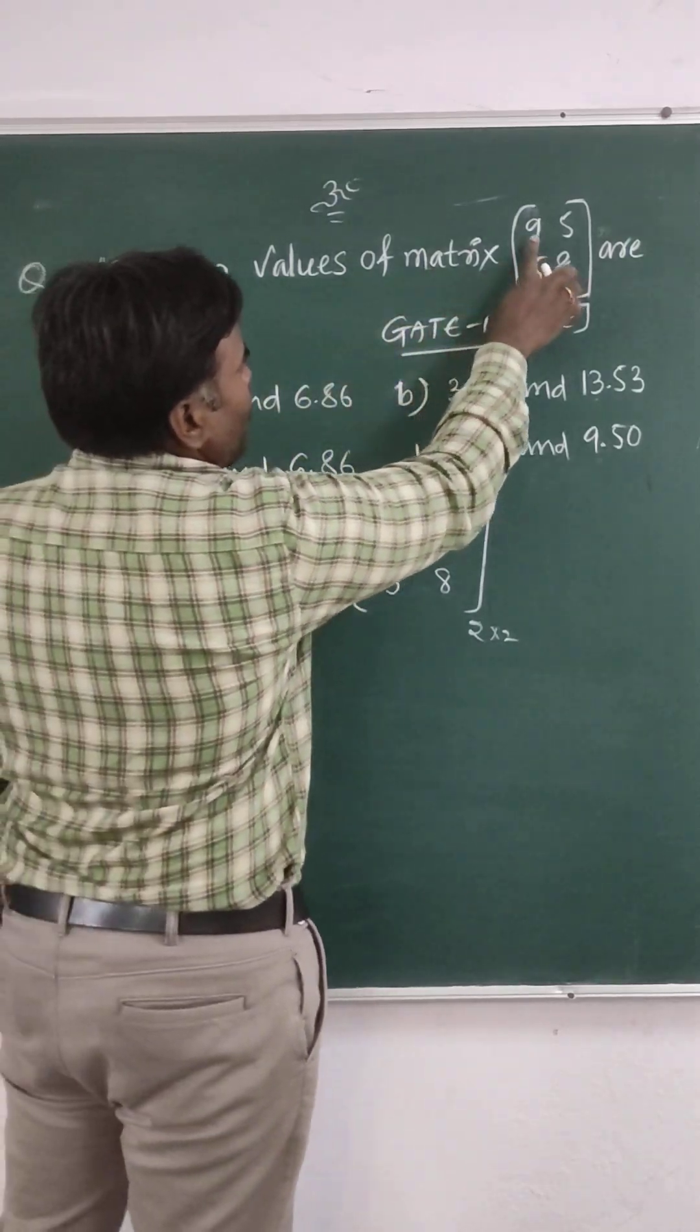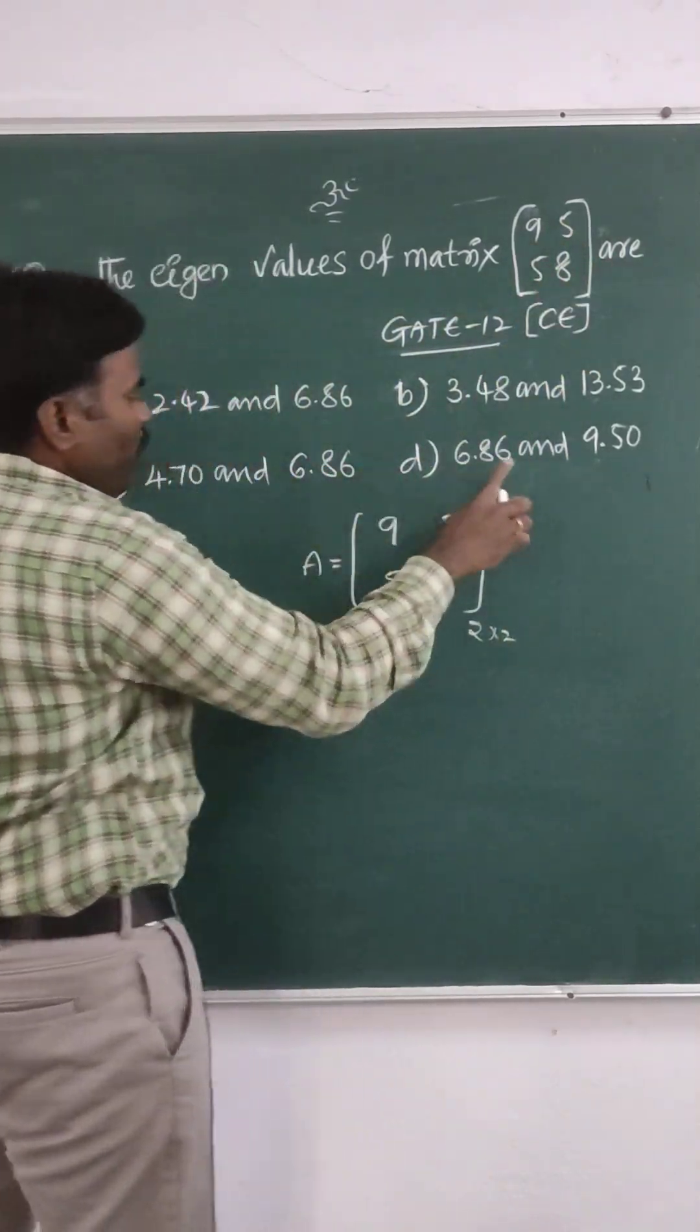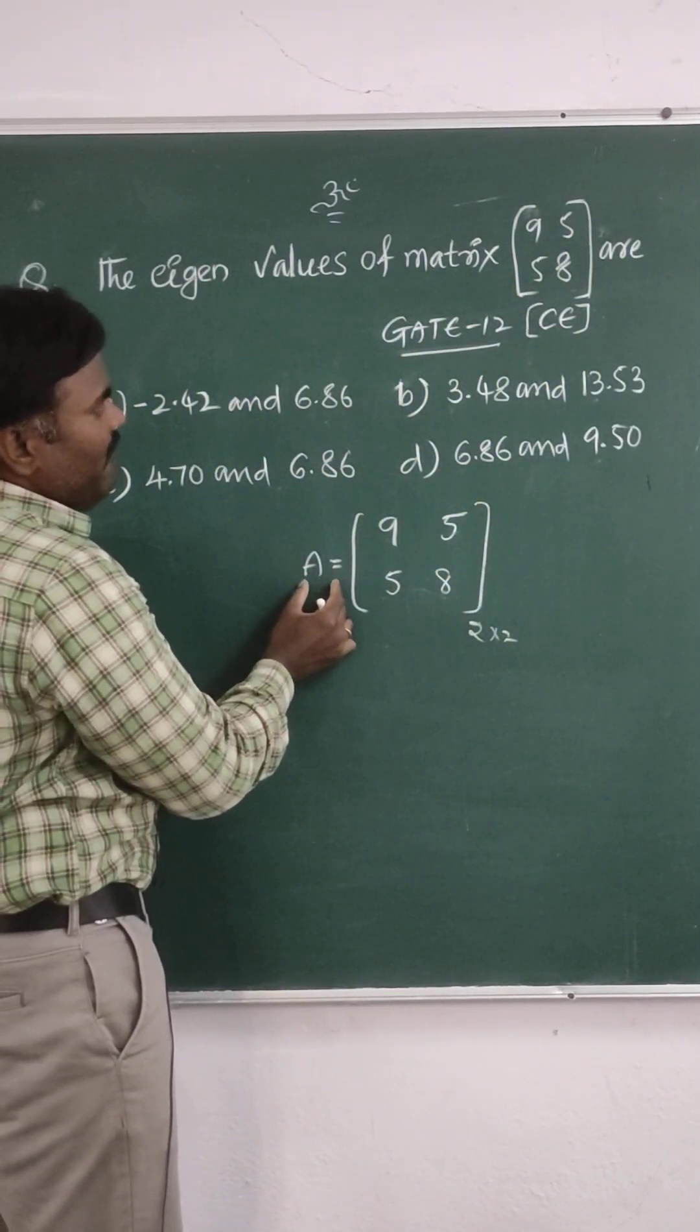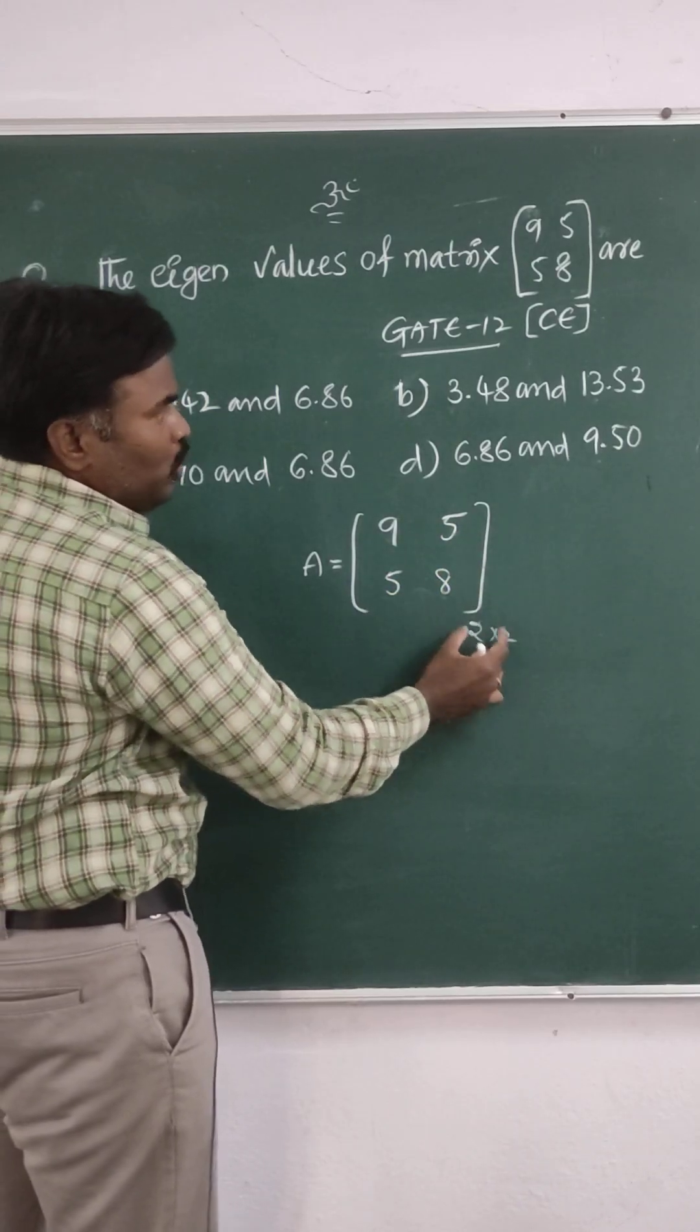The eigenvalues of the matrix [9, 5; 5, 8] - they are given with 4 options. I consider the given matrix A as [9, 5; 5, 8], which is a 2 by 2 matrix.